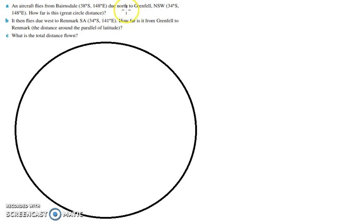An aircraft flies from Bansdale in this location and then goes due north to Grenfell in this location. How far is this? And it says great circle distance. We need to label north, south, east, west and the center of the circle. This really helps us with a drawing. And if we put in our equator, we turn this into a 3D diagram.